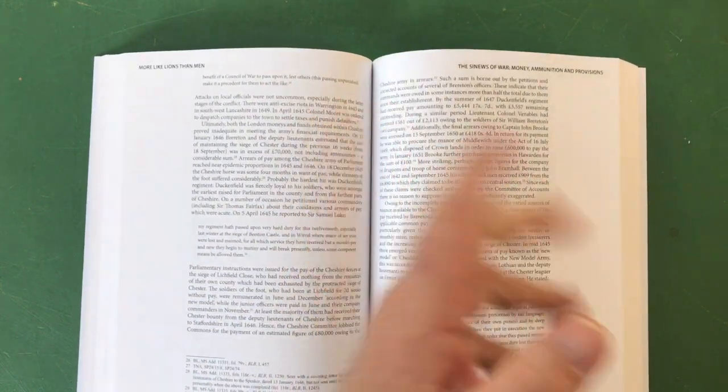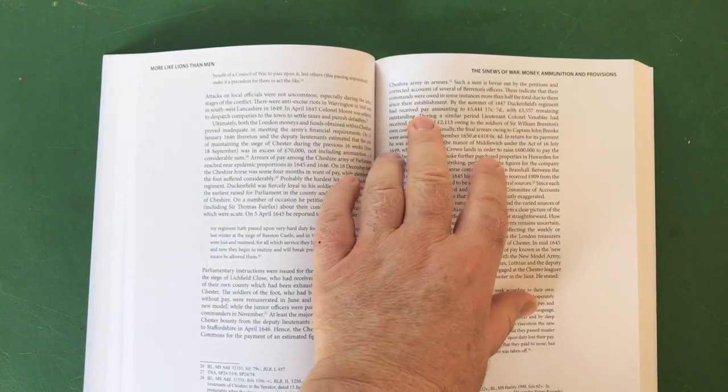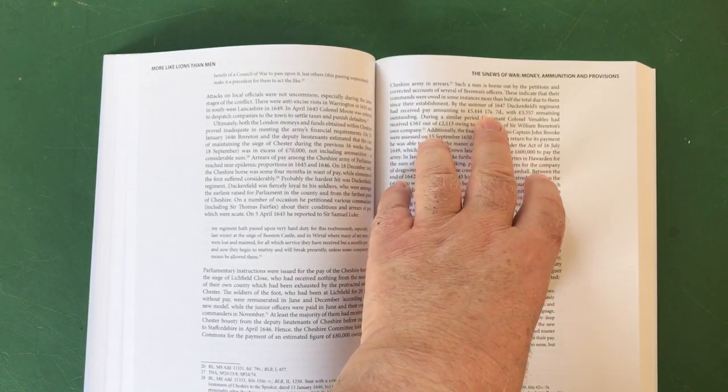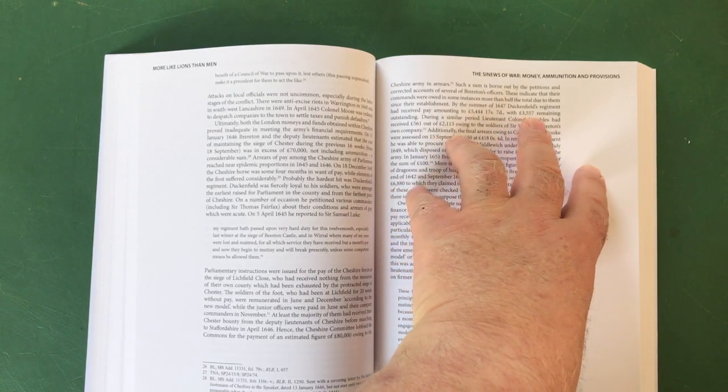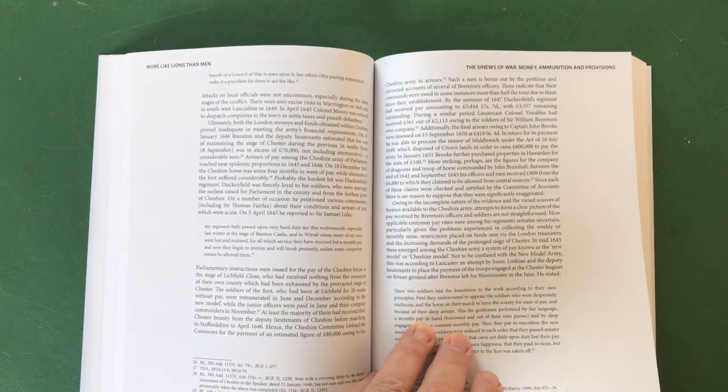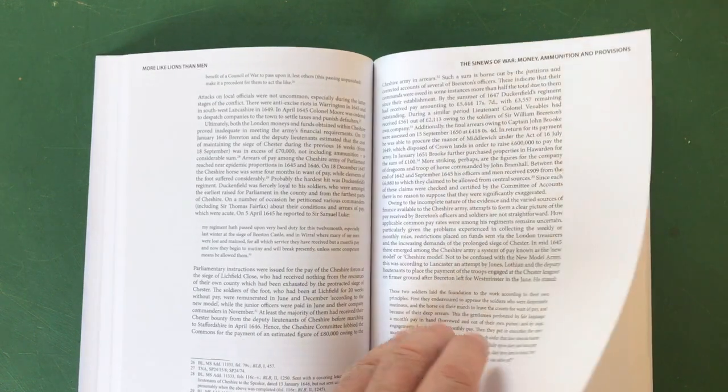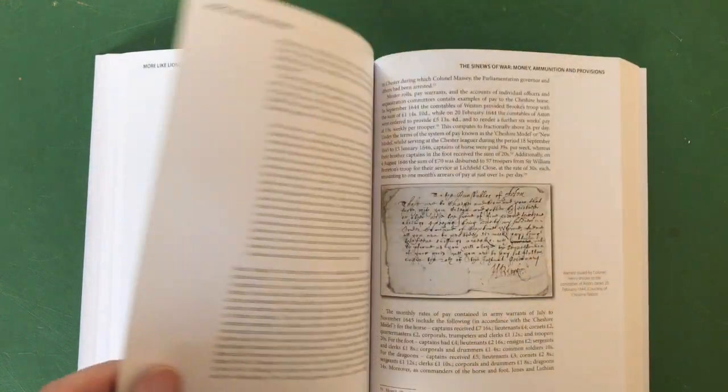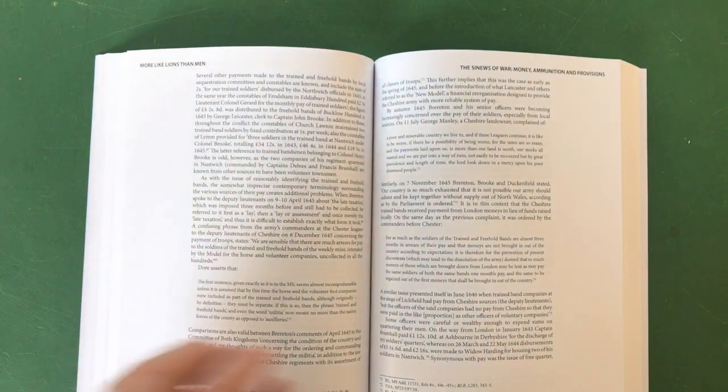More detail, lots of detail about the expenses. I mean for example, just my fingers landed on this: by the summer of 1647 Duckenfield's regiment had received pay amounting to £5,444 17 shillings and 7 pence, with £3,557 remaining outstanding. Lots of detail like that. Those of you who like to run campaigns and want to know how much it costs to pay a soldier and what it costs to run a regiment, this stuff is fantastic.